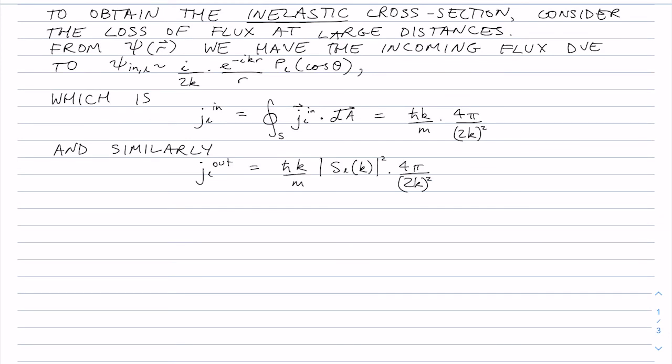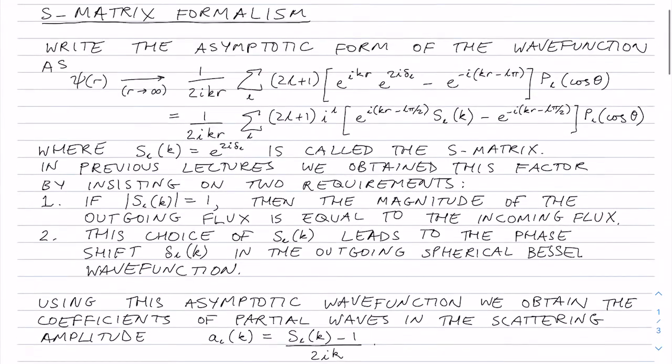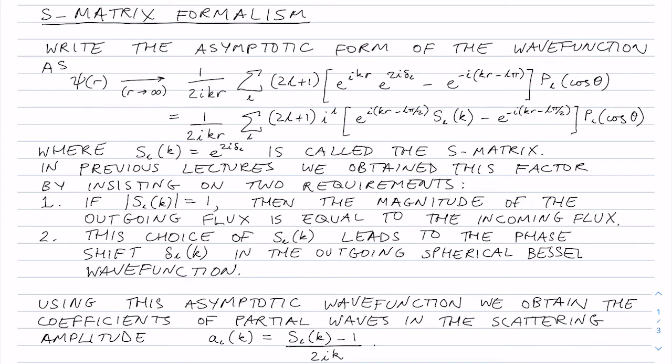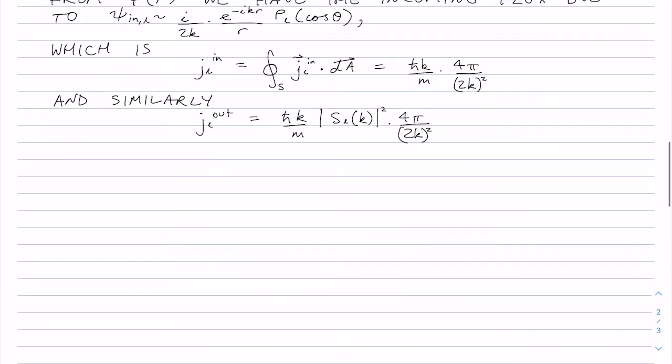And this is the outgoing flux defined over the enclosed surface at large distances. So these in and out are just coming from the wave functions that we wrote right at the top here, the incoming and the outgoing waves. The outgoing wave, we have the S factor here, the S matrix, and so that leads to this form for the total outgoing flux.